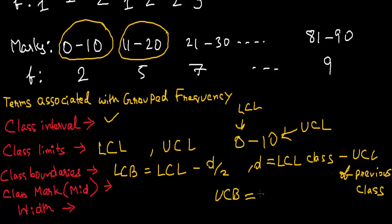And UCB, the upper class boundary, will be UCL plus d by 2. Here d will be LCL of next class minus UCL of class.